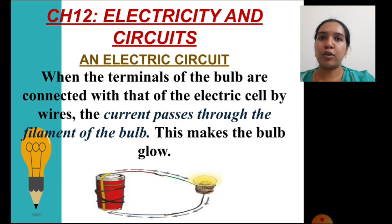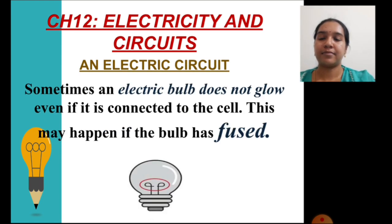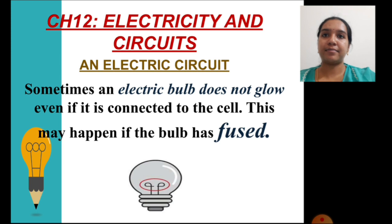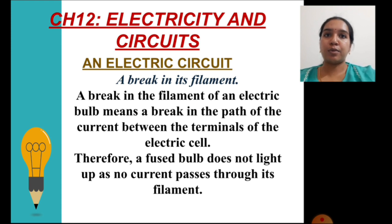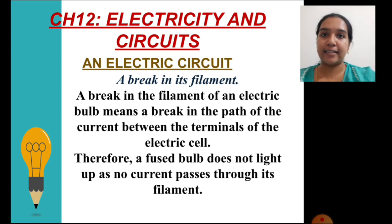The bulb glows when the current passes through the filament of the bulb. The bulb does not glow if it is a fused bulb. A fused bulb means there is a break in its filament, which breaks the path of current between the terminals of the electric cell.